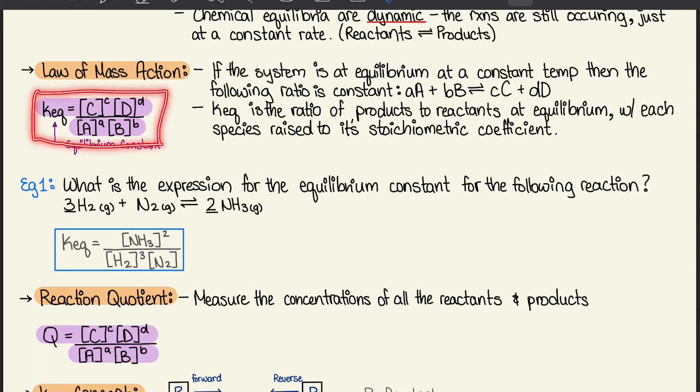The capital letters are the element itself, and the lowercase letters are the stoichiometric coefficients. So I have an example here. What is the expression of the equilibrium constant for the following reaction? We have 3 moles of H2 plus N2, with a forward-inverse reaction of 2 moles of NH3.